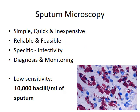The sample is now processed for sputum microscopy, wherein two methods are available: ZN stain and fluorescent stain. Sputum microscopy is a simple, quick, and inexpensive method. It is also reliable, feasible, and specific. While it is used for the diagnosis of tuberculosis, it is also used for monitoring the patient when they are on treatment.